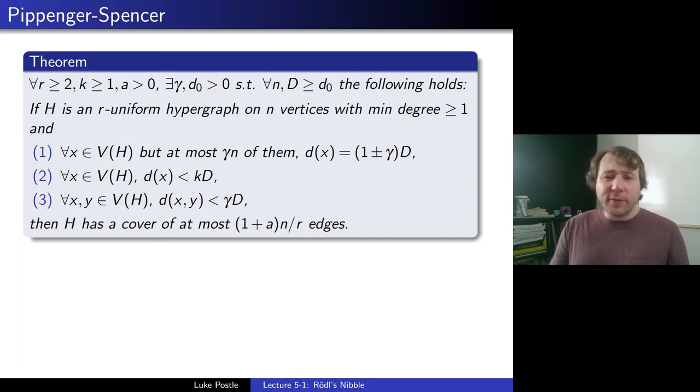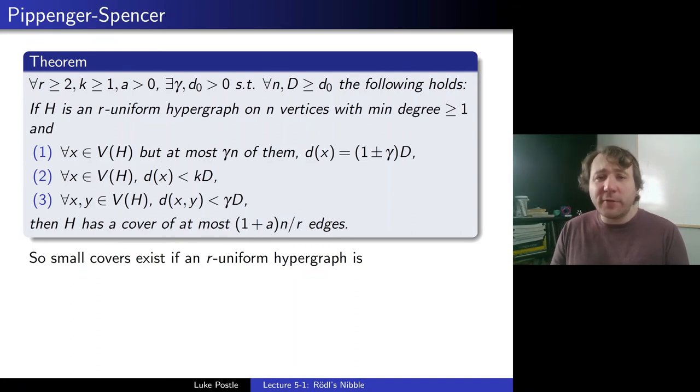And for every x and y distinct in V(H), d(x,y) is less than γd, then H has a cover of at most (1+α)n/r edges. So that's the theorem, it's quite a mouthful, let's unpack it a bit. So we have all these conditions, but what are we saying? r will be the uniformity, k will be some bounds somehow on the degree we'll talk about, α is somehow the error you allow in a cover. So if everything went somehow perfectly, we would perhaps hope if all the edges, if we're r-uniform, each edge can cover r vertices, so we'd hope that in n/r edges we could cover our hypergraph, and this is saying we could almost do that, we can get one plus a factor of a perfect cover.